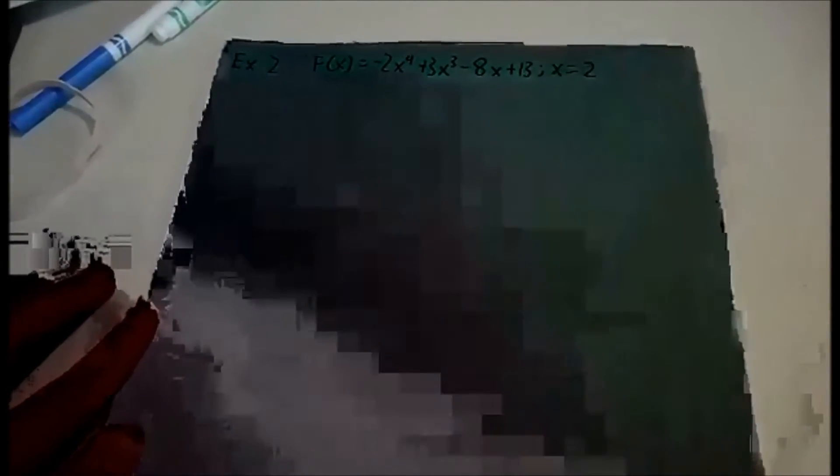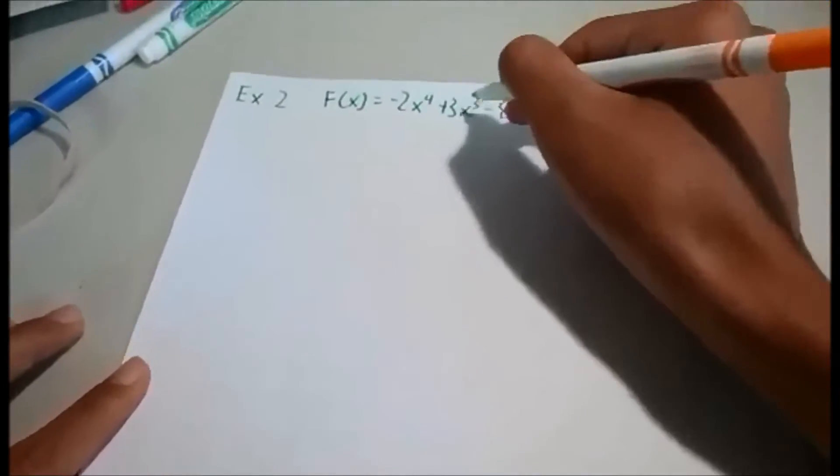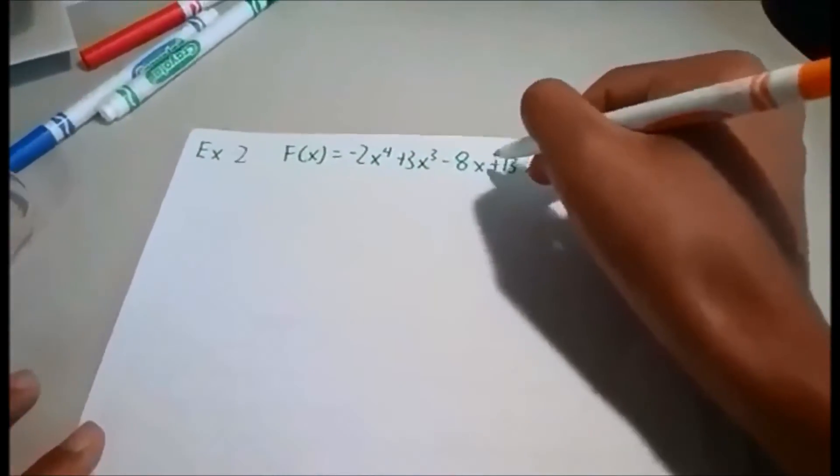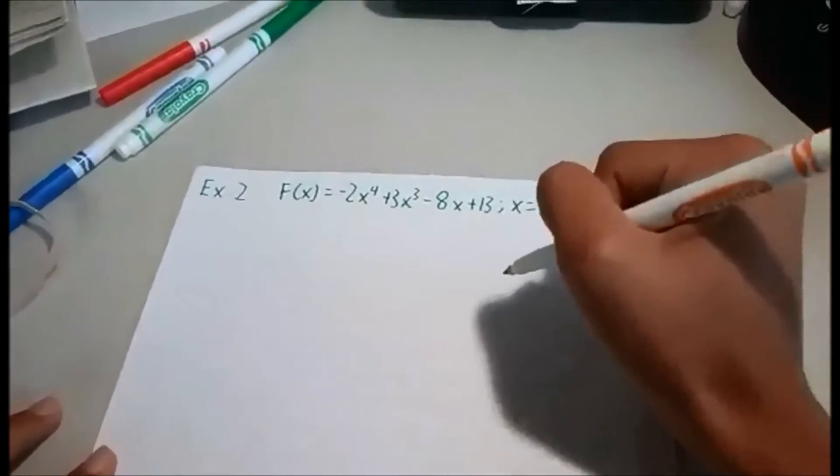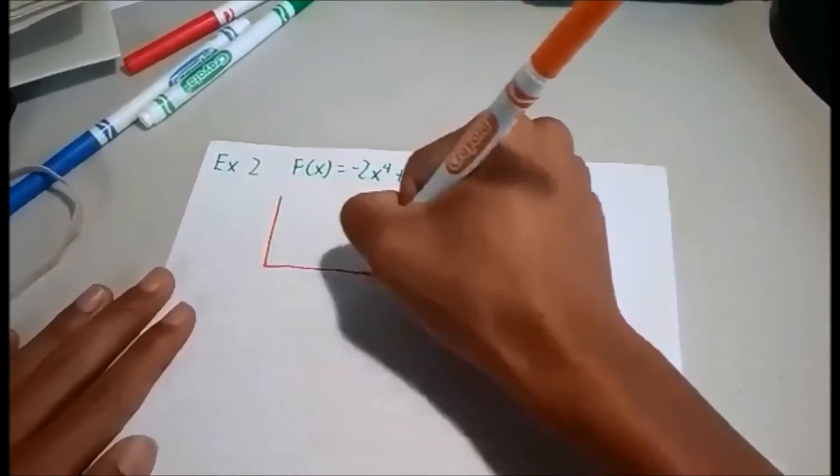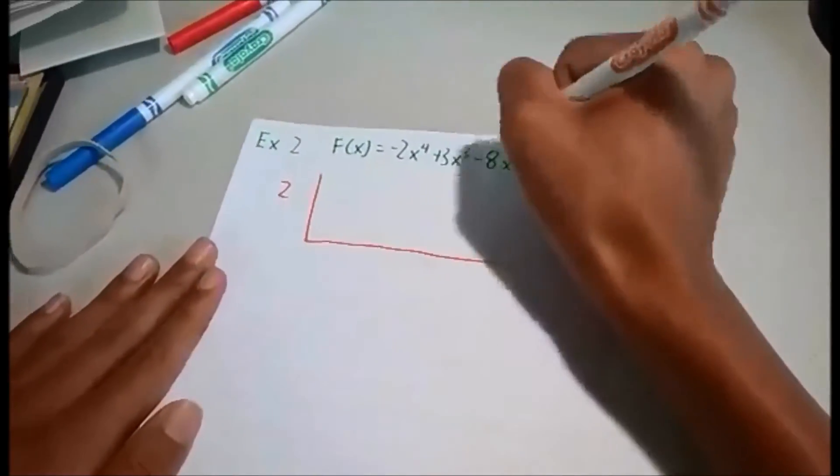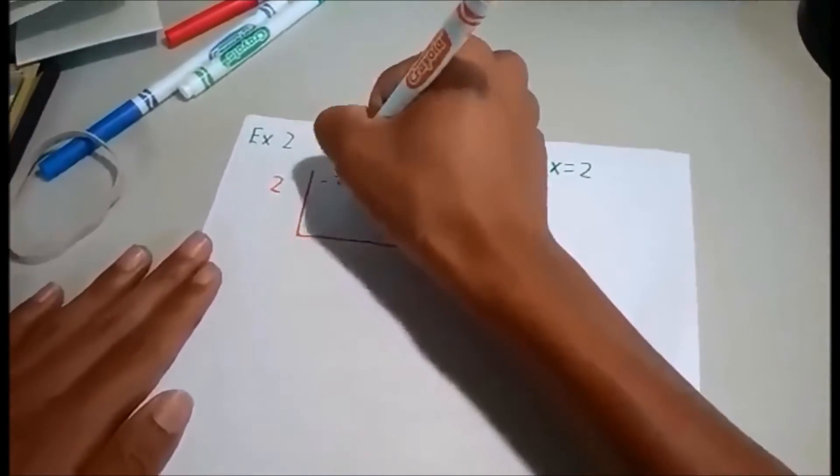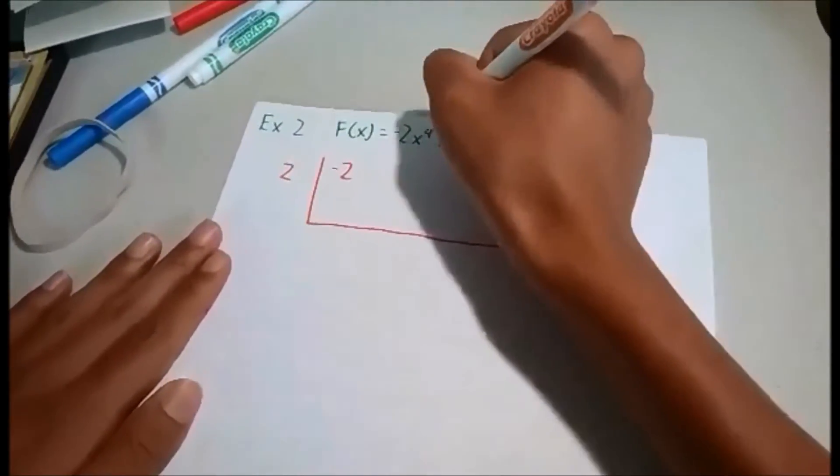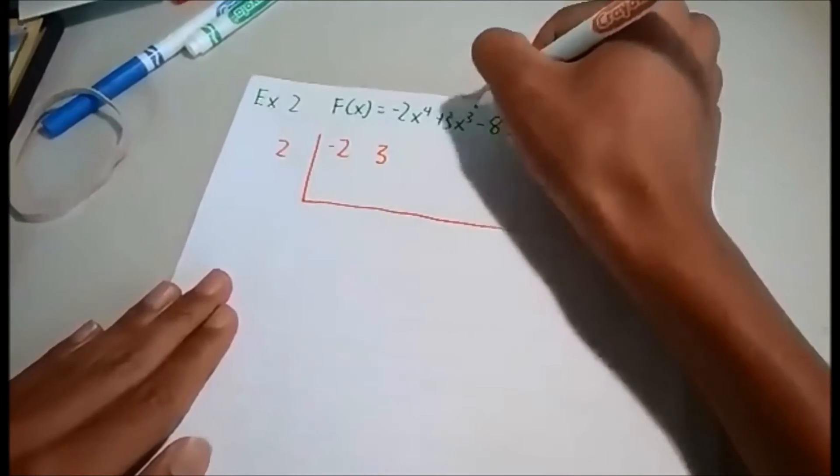Okay, so let's move on to example 2. Example 2 has the problem of f of x equals negative 2x to the power of 4 plus 3x cubed minus 8x plus 13 and x equals 2. So we will be doing the exact same thing as we did last problem by drawing the long L first. 2 will go on the outside. And we will be putting these coefficients in negative 2 because x to the power of 4 and then 3 here because x to the power of 3.